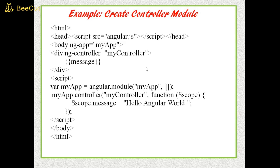In this example, we have created a controller name myController using myApp.Controller method. Here myApp is an object of a module and controller method creates a controller inside myApp module.